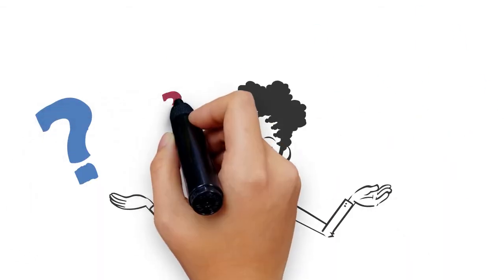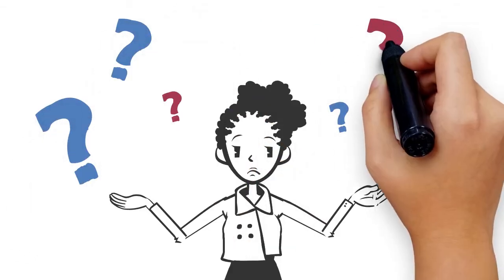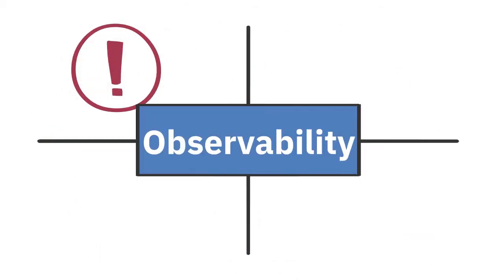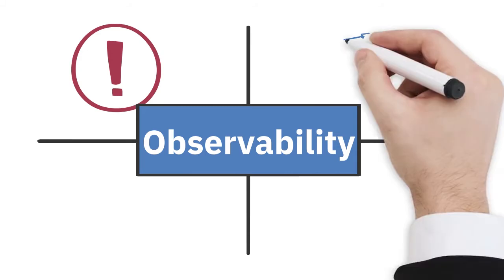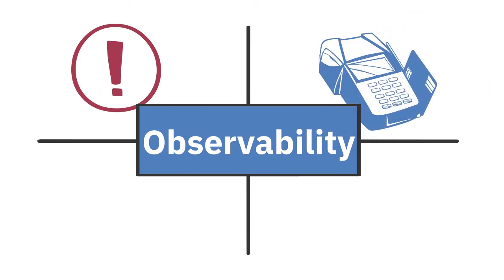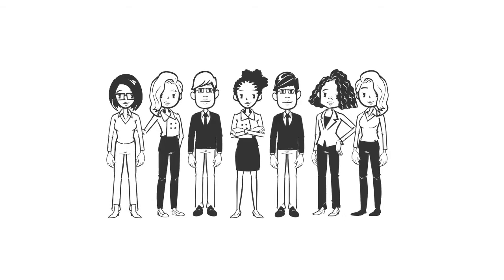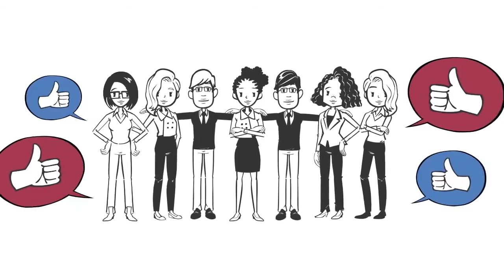Why should businesses spend time and resources on this practice? Observability practices have allowed businesses to witness reduced false alerts, increased revenue by improved transaction processes, increased developer productivity, and faster resolution of critical business issues. In short, it can increase the value of a business proficiently over time.